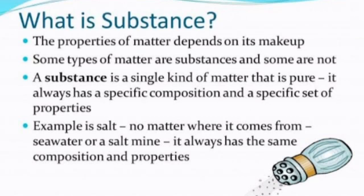What is a substance? The properties of matter depend on its makeup. Some types of matter are substances and some are not. A substance is a single kind of matter that is pure. It also has a specific composition and a specific set of properties. Example is salt. No matter where it comes from, seawater or salt mine, it always has the same composition and properties.